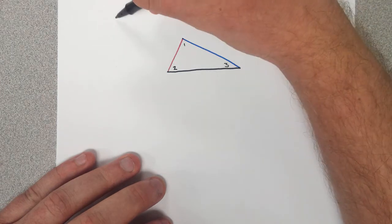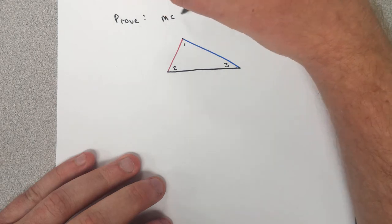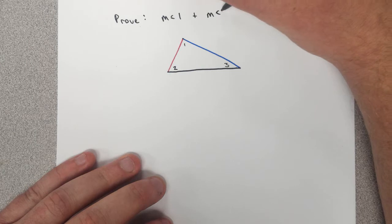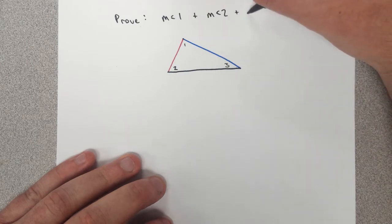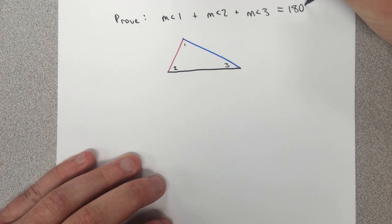So what I'm trying to prove is that when I take these angles, the measure of angle 1 plus the measure of angle 2 plus the measure of angle 3, this should add up to 180 degrees.